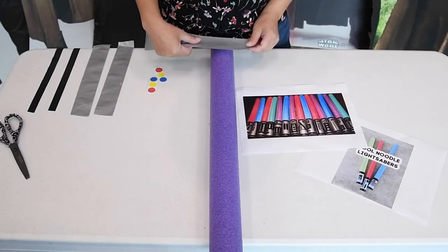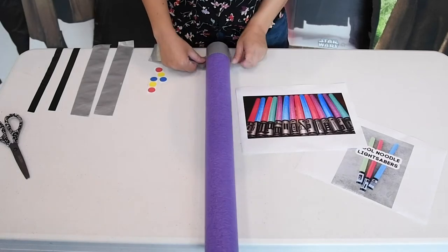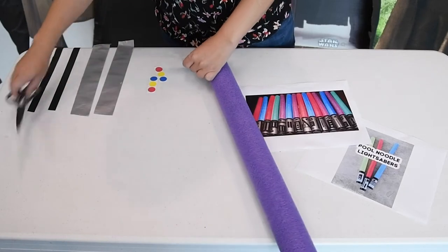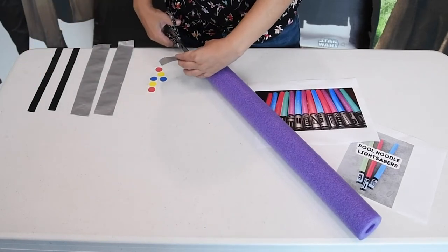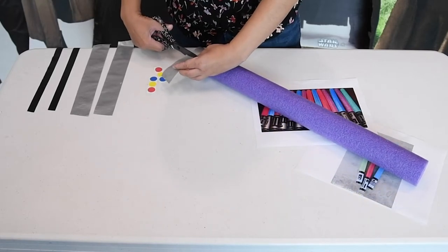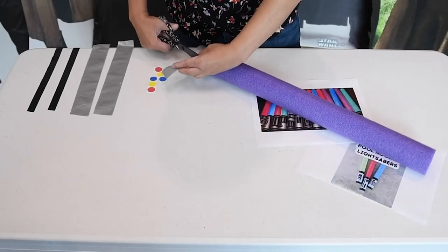We're going to start with our silver duct tape, and I'm going to start at the bottom and just wrap it around. If you have some scissors, you can cut where you need to, and you need a grown-up to help you with that as well because this tape is pretty sticky.